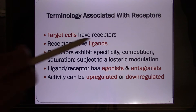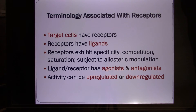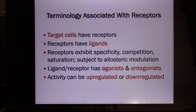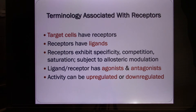A lot of receptors have allosteric modulation — they have a different binding site, not the main binding site. Some toxic chemical molecules can bind with that allosteric modulation site and change the structure of the receptor. It turns out the receptor becomes more or less sensitive to ligands — most of the time they become less sensitive.